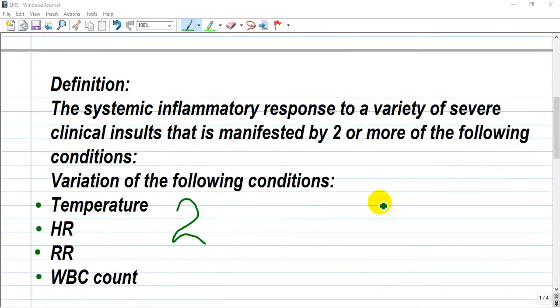By definition, SIRS is a systemic inflammatory response to a variety of severe clinical insults that is manifested by two or more of the following conditions: temperature, heart rate, respiratory rate, and white blood cell count.